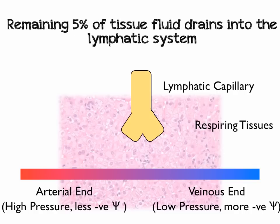But what happens to the remaining 5%? That gets mopped up by the lymphatic system — it gets absorbed by the blind-ending tubule, or lymphatic capillary, and the remaining 5% is absorbed there.